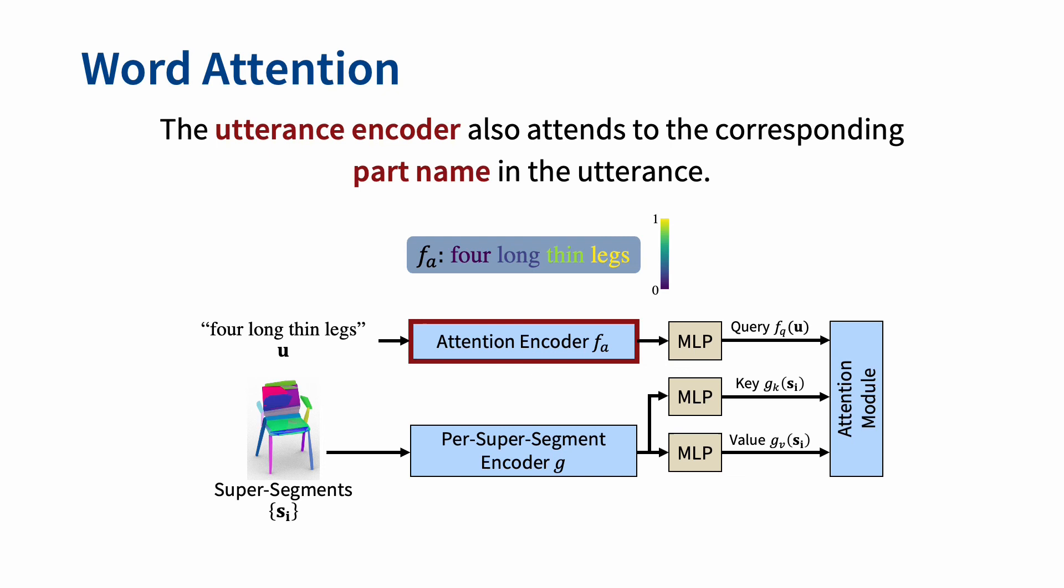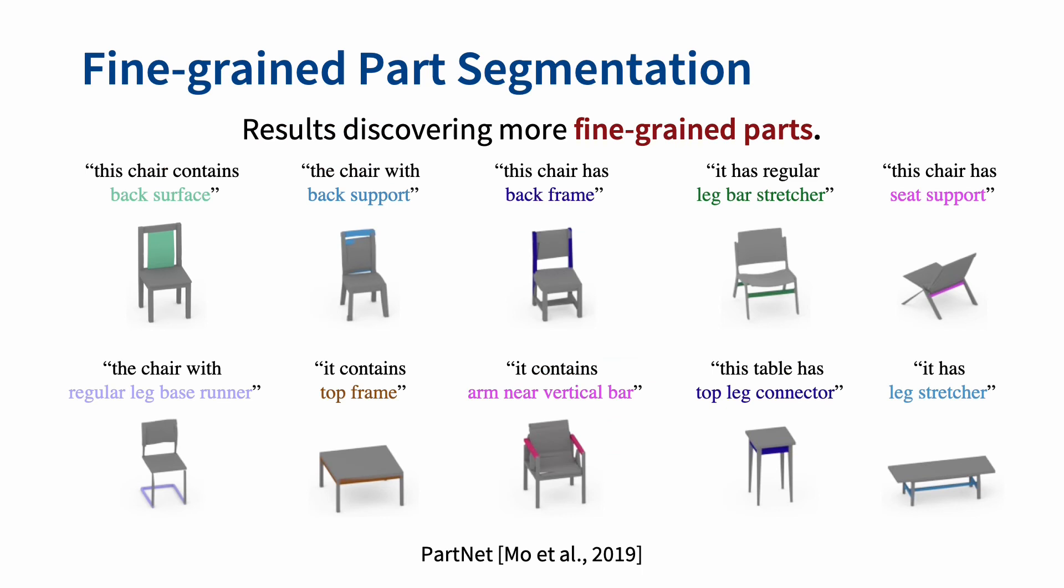Also, PartGlot discovers not only semantic parts in the 3D shape but also corresponding words in the input utterance through another attention. The attention encoder of the utterance decides where to look in the target shape discrimination, and it attends to the proper part word in the input utterance.